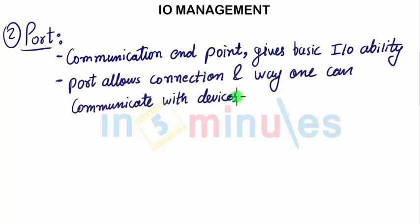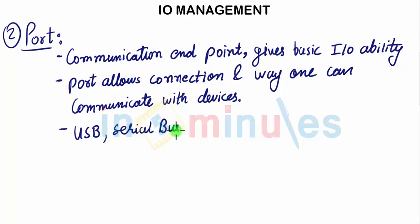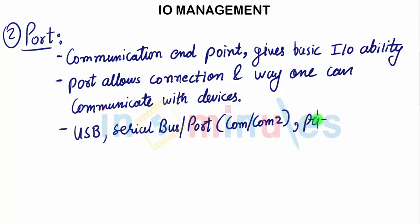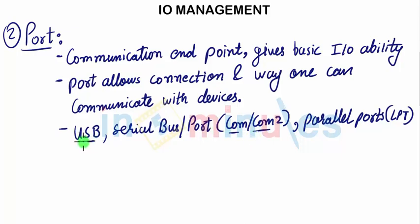Port allows connection and the way one can communicate with devices. The most commonly known ports are USB — universal serial bus — and the older serial port, where computers have COM1 and COM2. Another commonly known port is the parallel port, also known as LPT. Old dot matrix printers connect to LPT, and older mice connect to serial ports, while new keyboards and mice connect to USB.